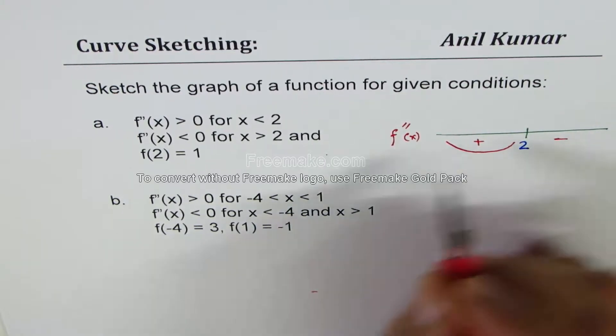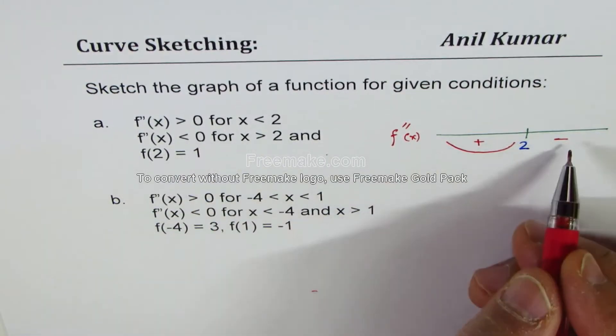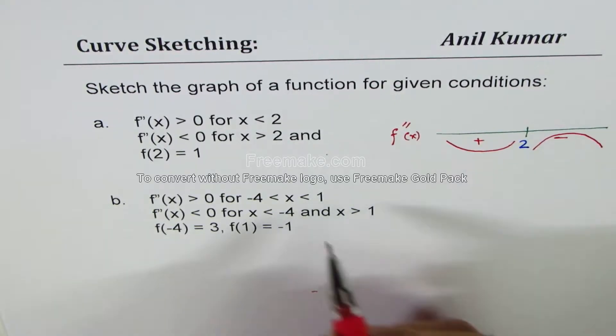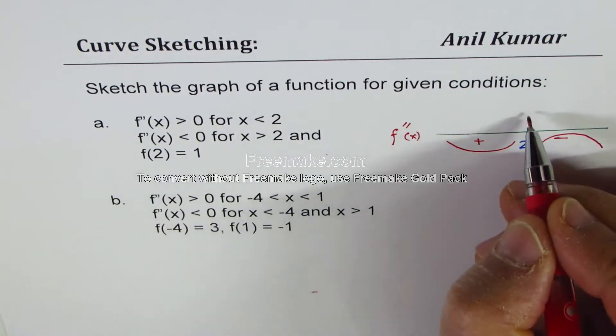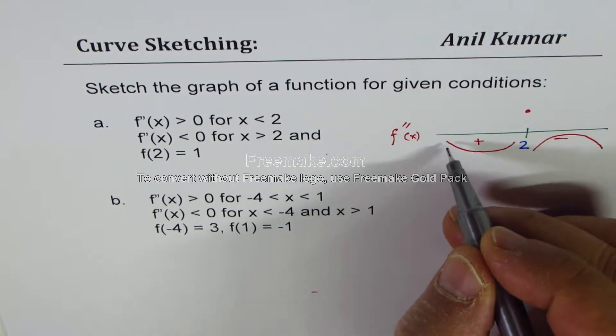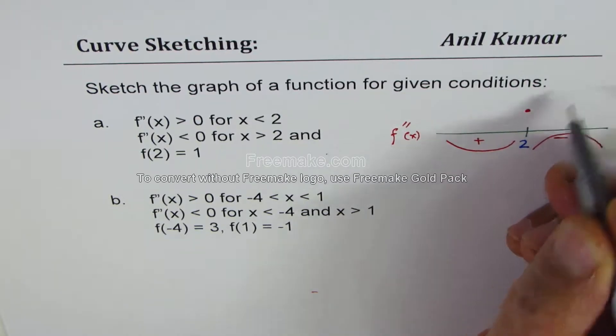On the right side it is less than 0, means negative. That means the function is concave down. And at 2 we are given a value. Let this value be 1.